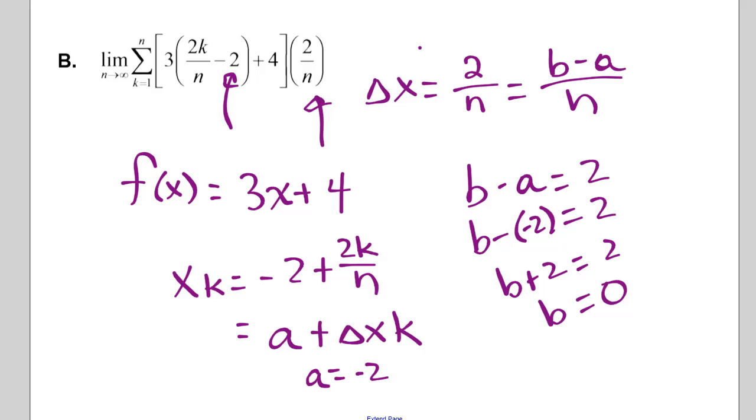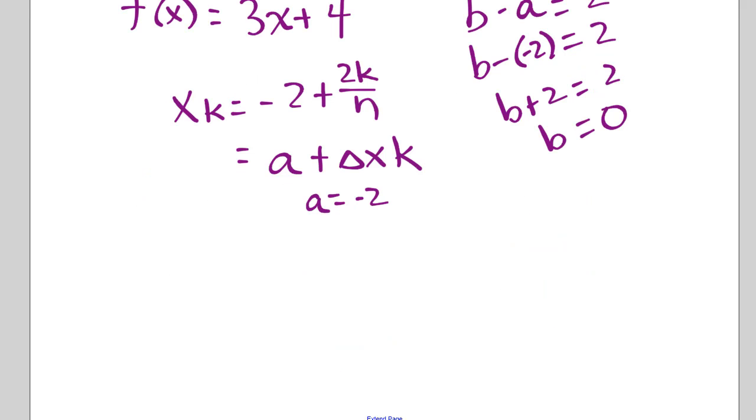So we're going to have limits of integration going from negative 2 to 0. Okay, we may be able to go ahead and get it here. So we've got the integral from negative 2 to 0. And f of x we just said was 3x plus 4 dx.